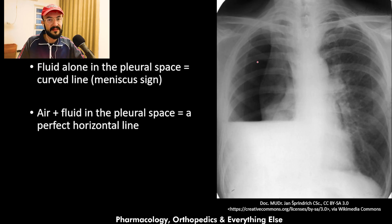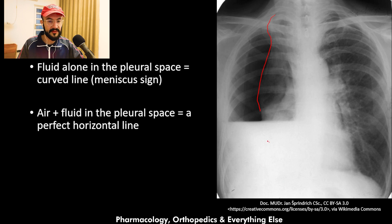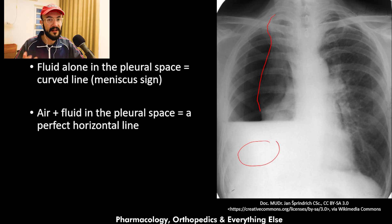This is another frontal chest x-ray. You can see the lung edge here, and lung markings are not seen beyond it, confirming a pneumothorax. You can also see that there is fluid in the chest as well, so we have both fluid and air at the same time.